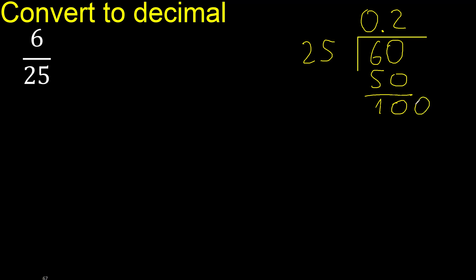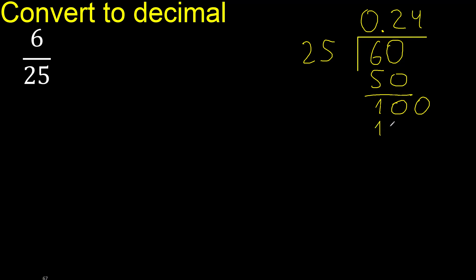Always complete with 0 point. 25 multiplied by which number? Multiplied by 4 is 100. Subtract: remainder is 0. Therefore finish.